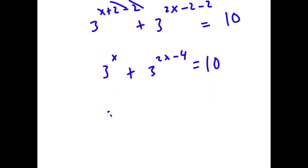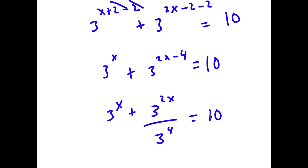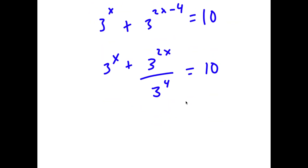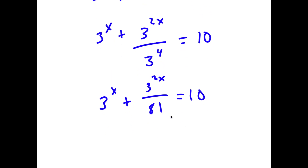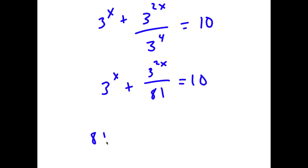Now 3 to the power of 2x minus 4 is the same thing as 3 to the power of 2x over 3 to the power of 4. And 3 to the power of 4 is 81, so I have 3 to the power of x plus 3 to the power of 2x over 81 is equal to 10. Now I'm going to multiply both sides by 81, so I have 81 times 3 to the power of x plus 3 to the power of 2x is equal to 810.